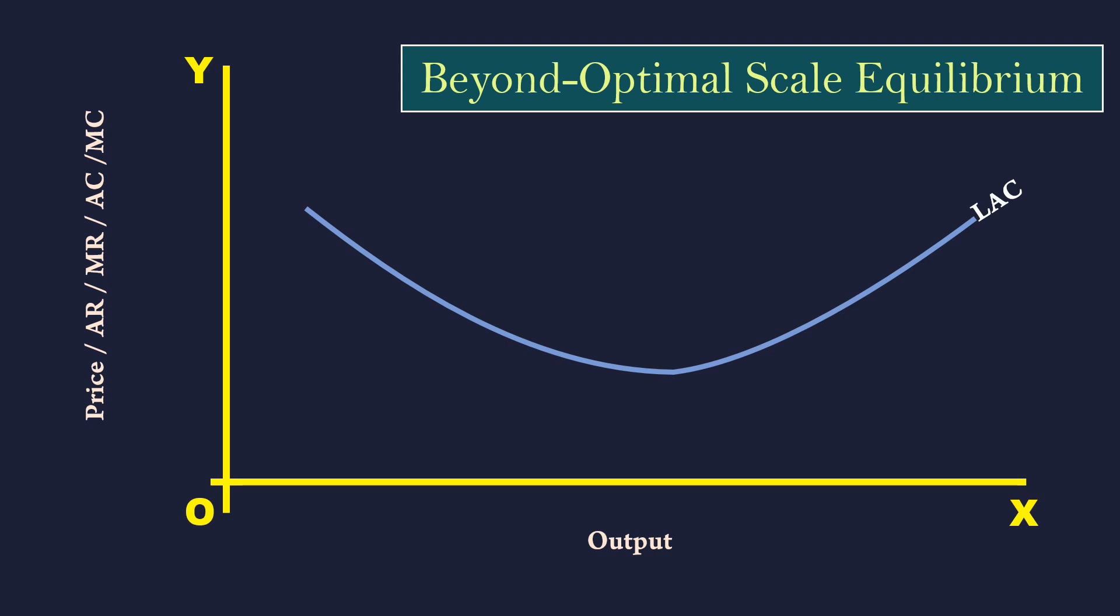The market condition is given by the AR and MR curves. LAC is the Long Run Average Cost Curve. LMC, the Long Run Marginal Cost Curve.